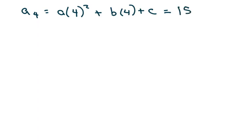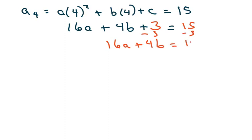So we're going to get 16a plus 4b plus c equals 15. So we have 16a plus 4b and I'm going to subtract three from both sides equals 12.